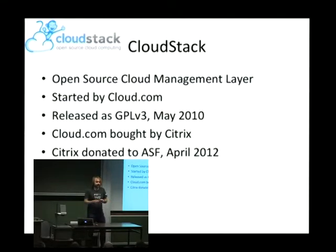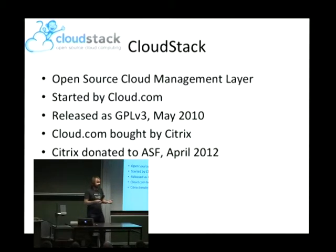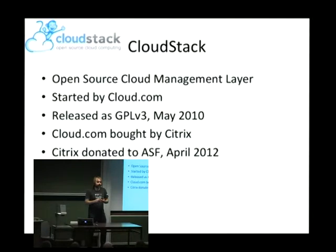Citrix, as some of you might know, is trying to develop more of an open model in the things that they do, with things like Xen and CloudStack. Cloud.com was bought, and then Citrix donated the CloudStack code to the Apache Software Foundation in April of 2012. Shortly thereafter, CloudStack 4.0 came out — that was the first release actually incubated from the Apache Software Foundation. It is now under the Apache license, no longer under the GPL license.